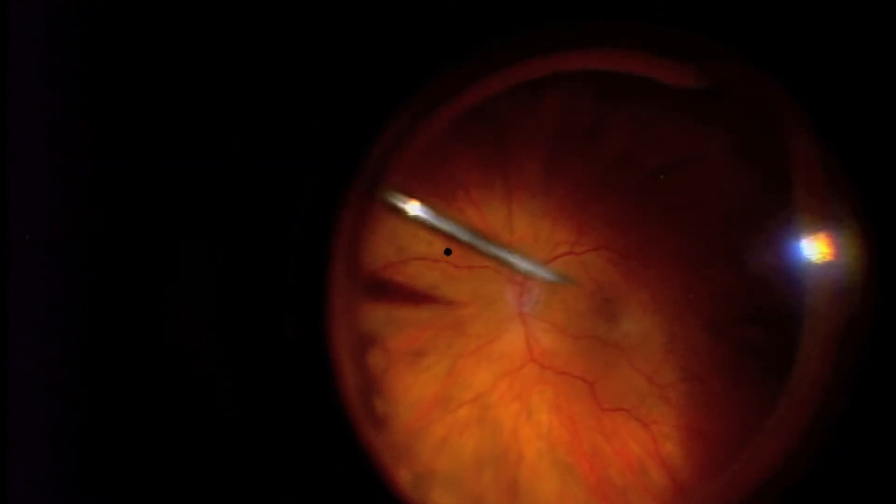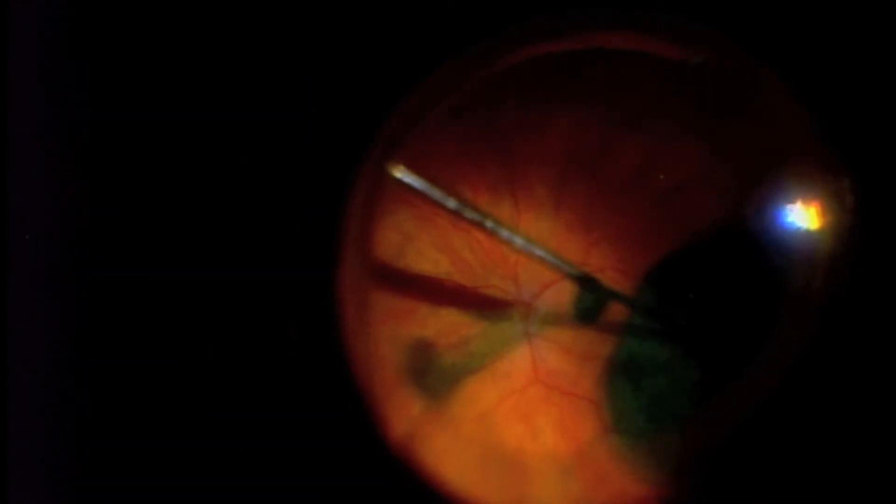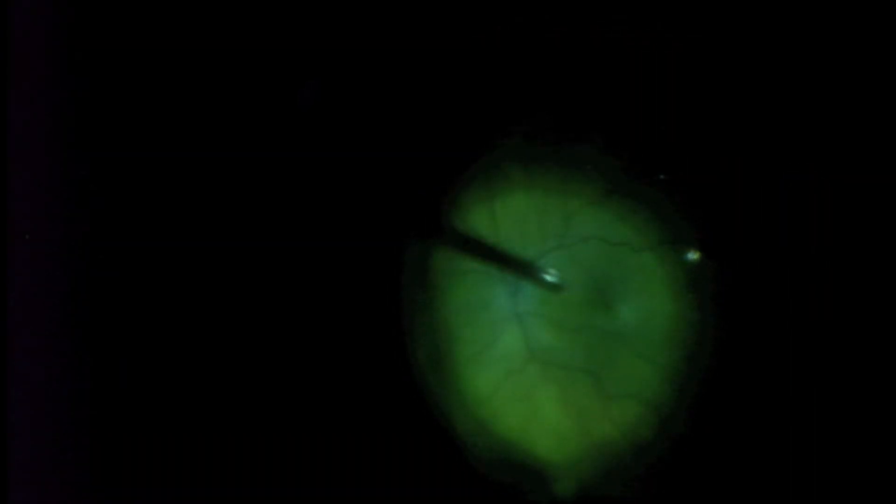After removing the vitreous, I usually inject a very dark green dye. It's called ICG. As it's removed from the eye, only the tissue on the surface of the retina becomes stained.